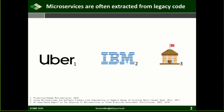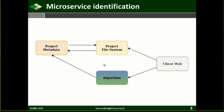This migration requires the identification of microservices. The microservice identification associates close elements of the legacy system to microservices. For example, this picture presents a possible simplified architecture of a legacy system. The first microservices identified are named Project Metadata, Project File System, Algorithm, and also a client frontend. This first identification leads to the relationships presented here.